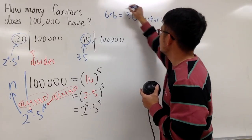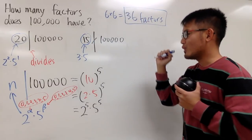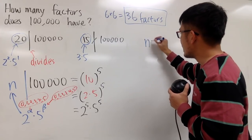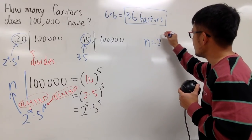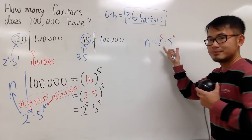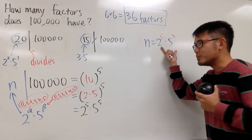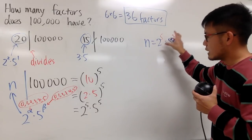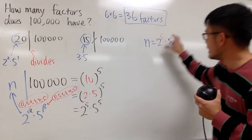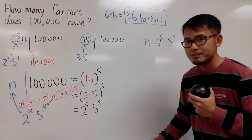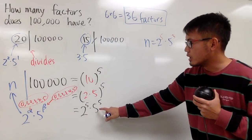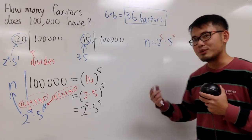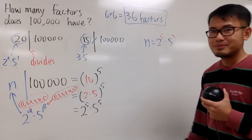Then, I'll just tell you guys, here is the answer. We have a total of 36 factors. So, just a quick example. n could be the following. I can choose 2 to the 5 times 5 to the third. This right here, it's a guarantee to be a factor of 100,000. Because you can just put this on the numerator and divide that. And of course, this and that will cancel. And you can just reduce 5 to the fifth divided by 5 to the third, you get 5 to the second, which is 25. So, that's the idea. Pretty cool, huh?